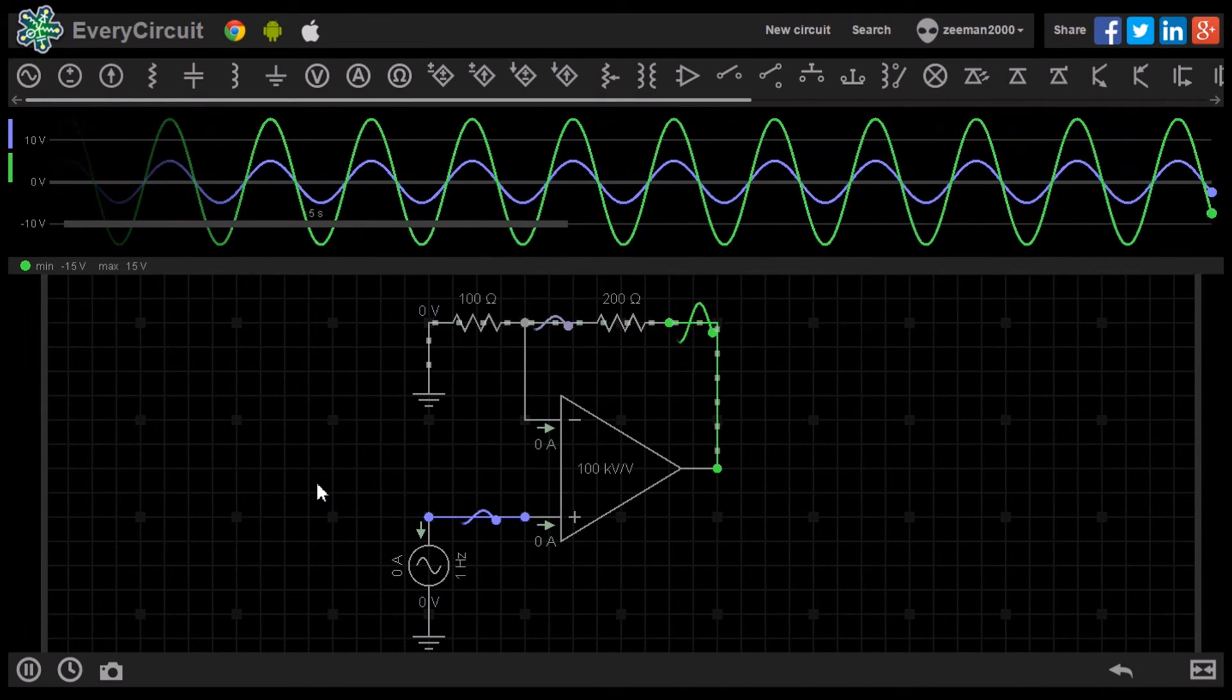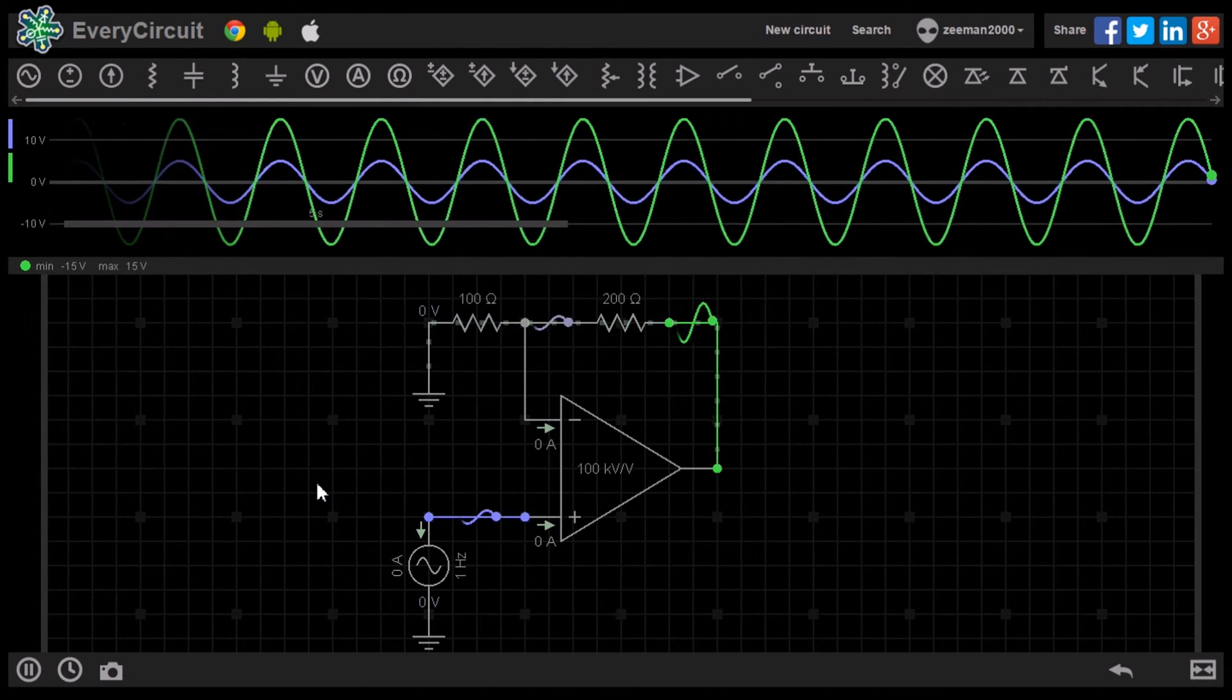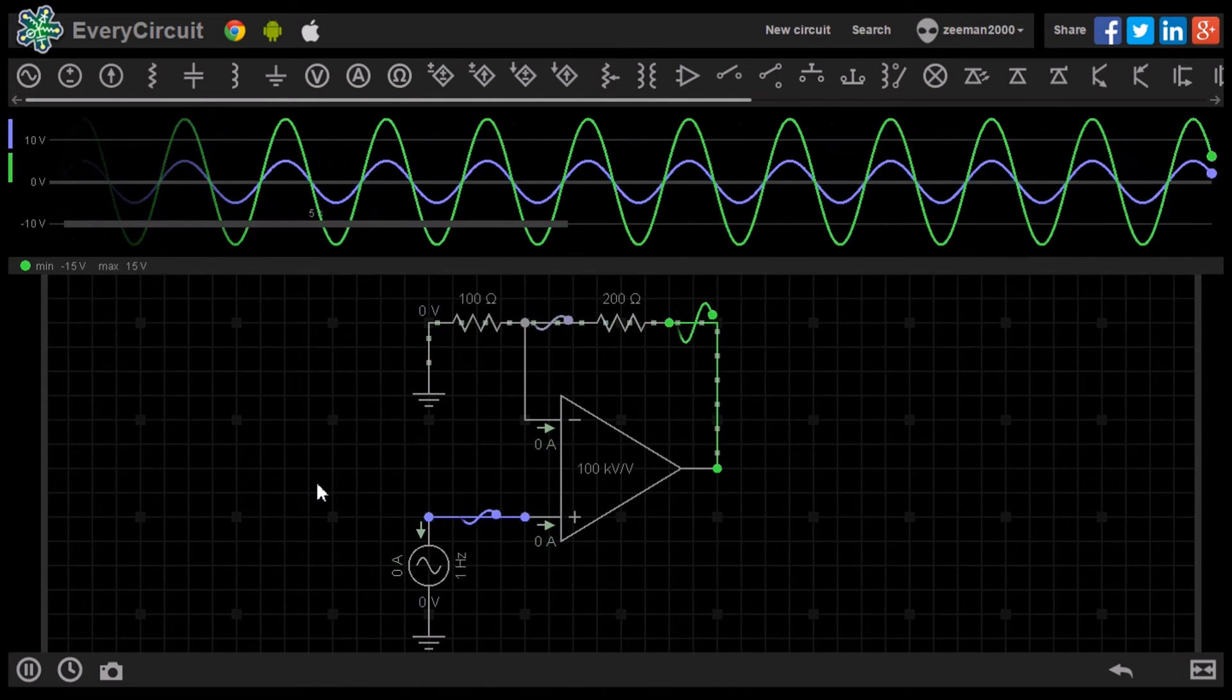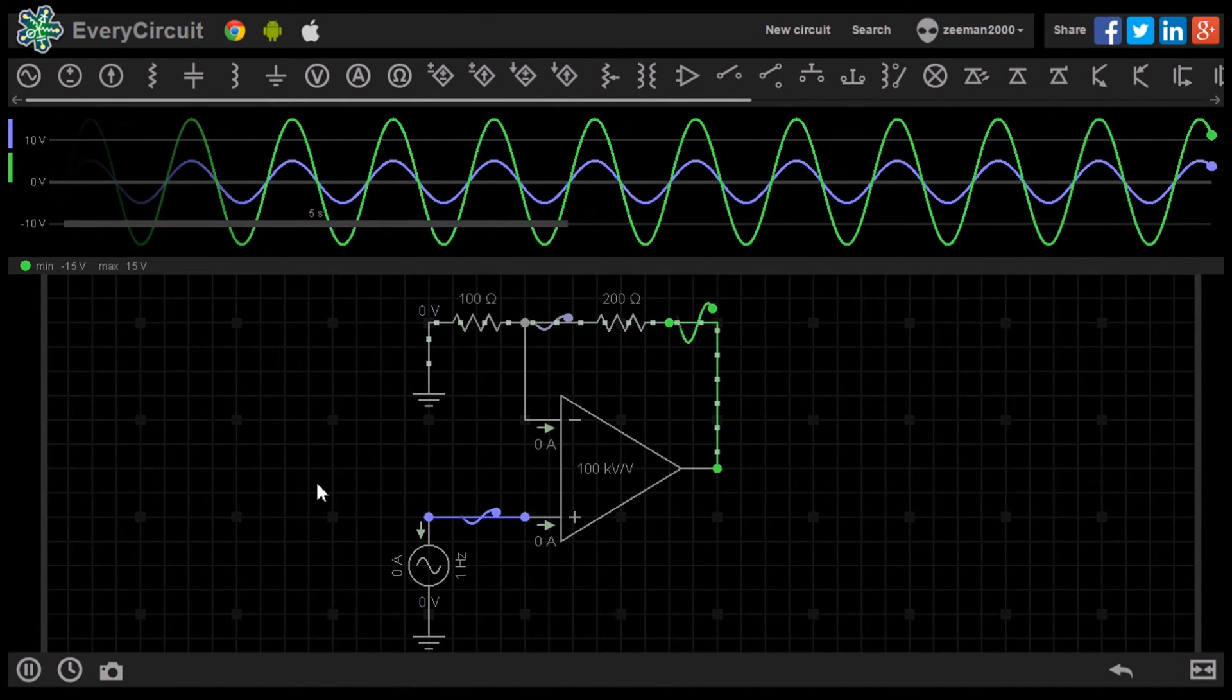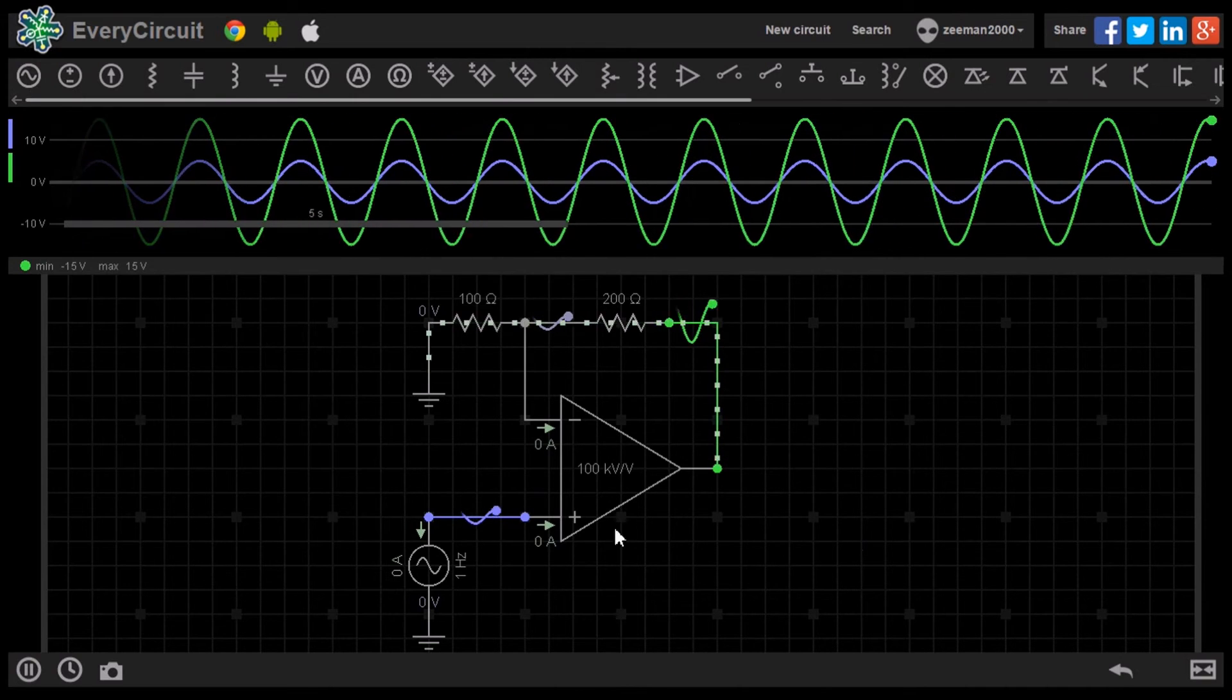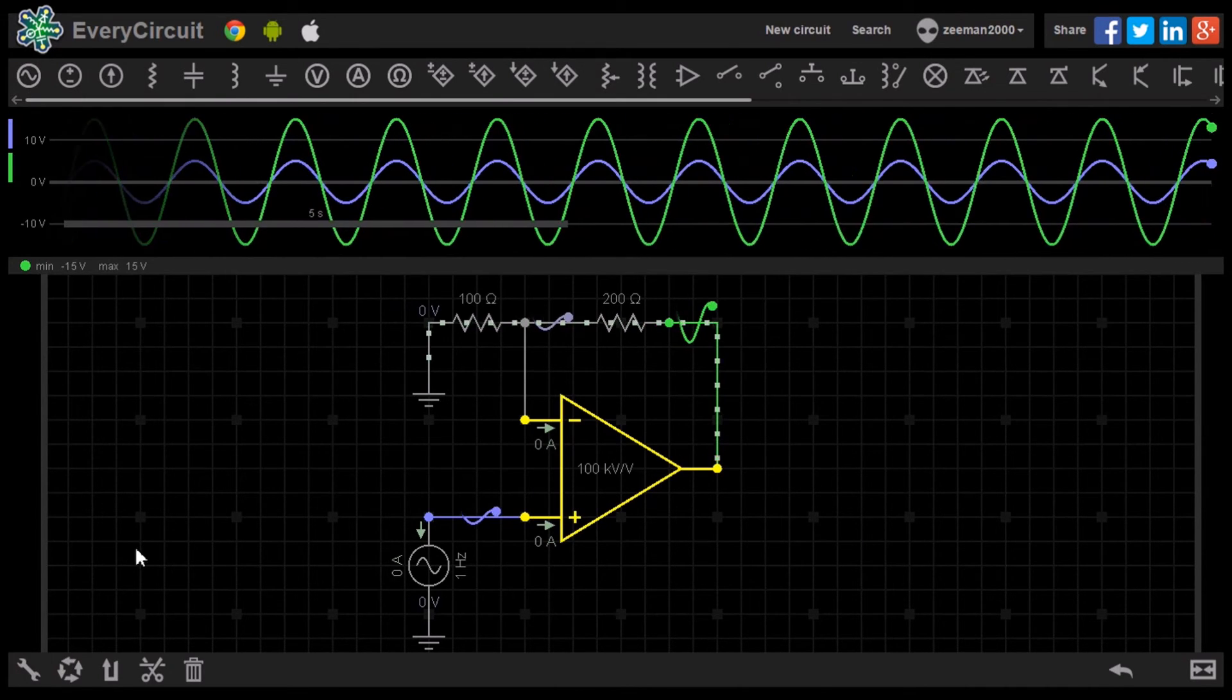30 volts peak-to-peak is the maximum we can output from the default setting on EveryCircuit's op-amp. We can easily adjust this and the gain by highlighting the component and adjusting as required.